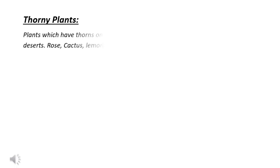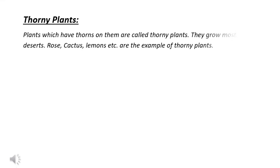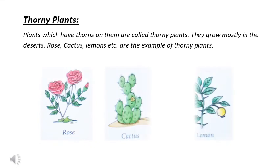Now, we will discuss about thorny plants. Plants which have thorns on them are called thorny plants. They grow mostly in the desert. For example, rose, cactus, lemon, etc.